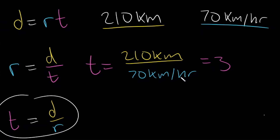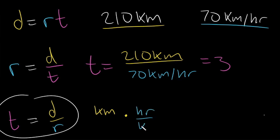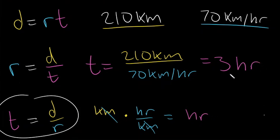Kilometers over hours is a fraction, and to divide by a fraction we multiply by the reciprocal. So we have kilometers multiplied by hours over kilometers. We cancel the kilometers and are left with our time unit: hours. So it took 3 hours to travel 210 kilometers at a speed of 70 kilometers per hour.